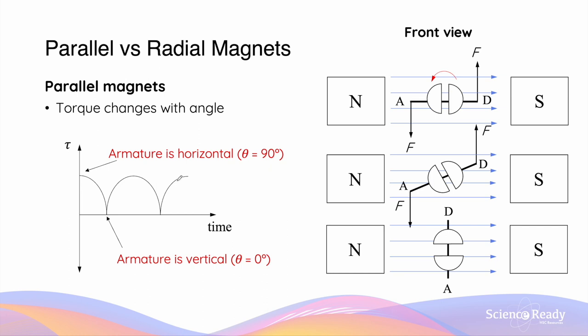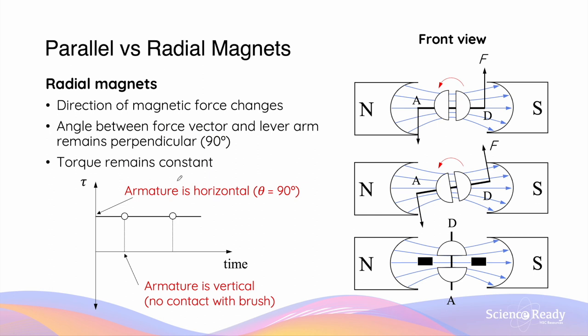So in summary, by using a pair of parallel magnets, the torque acting on the armature will fluctuate in magnitude throughout its rotation. In contrast to parallel magnets, when we are using a pair of radial magnets, this limitation of fluctuating torque is overcome.